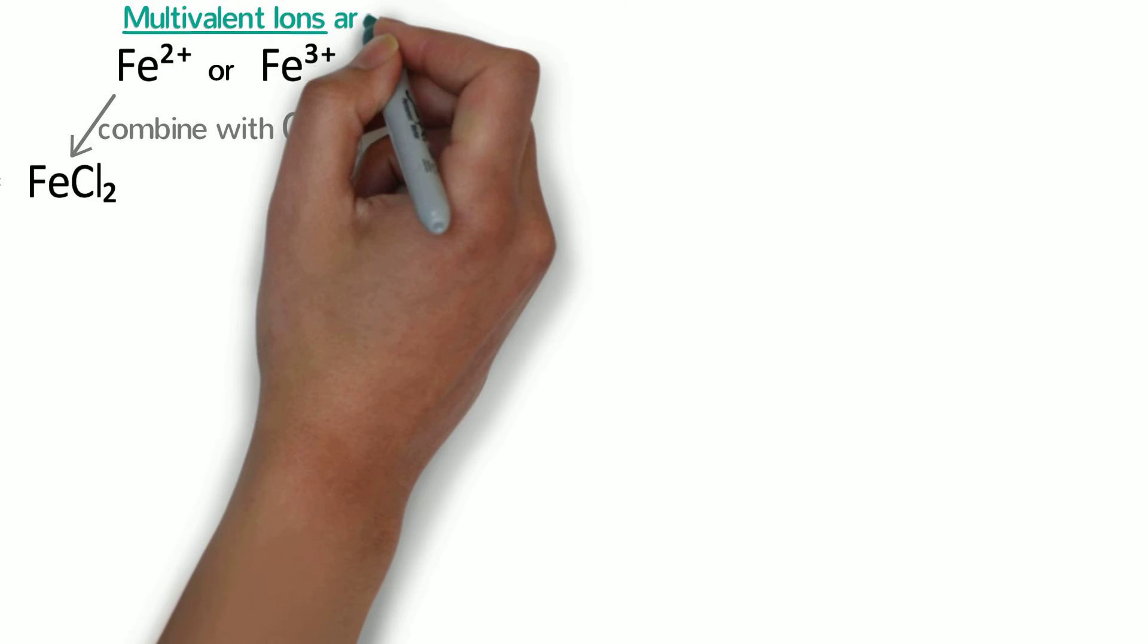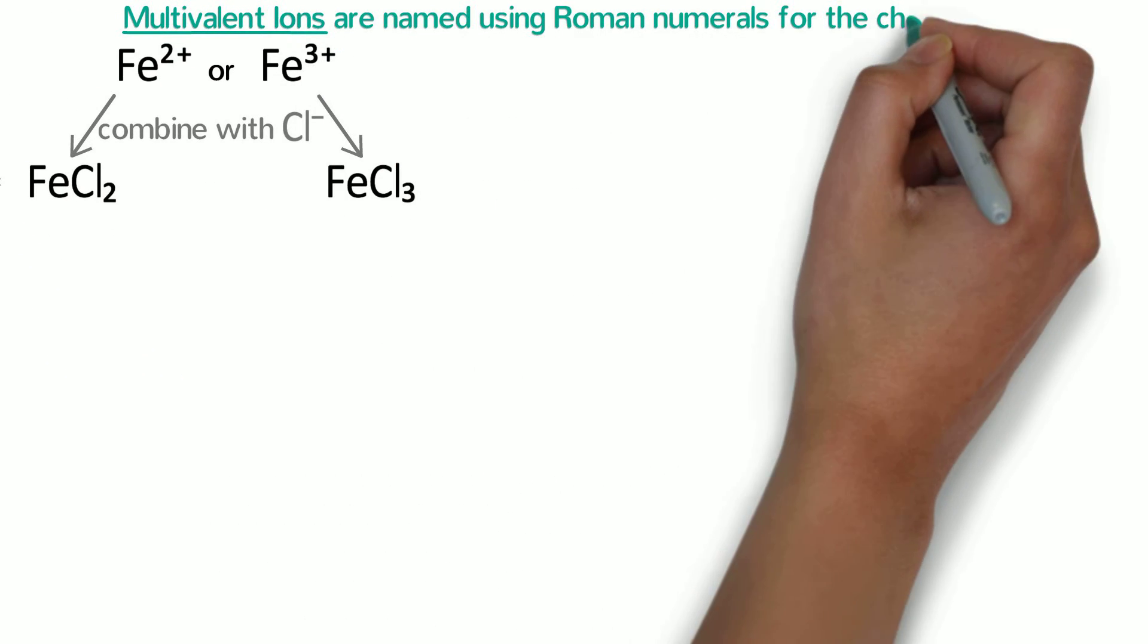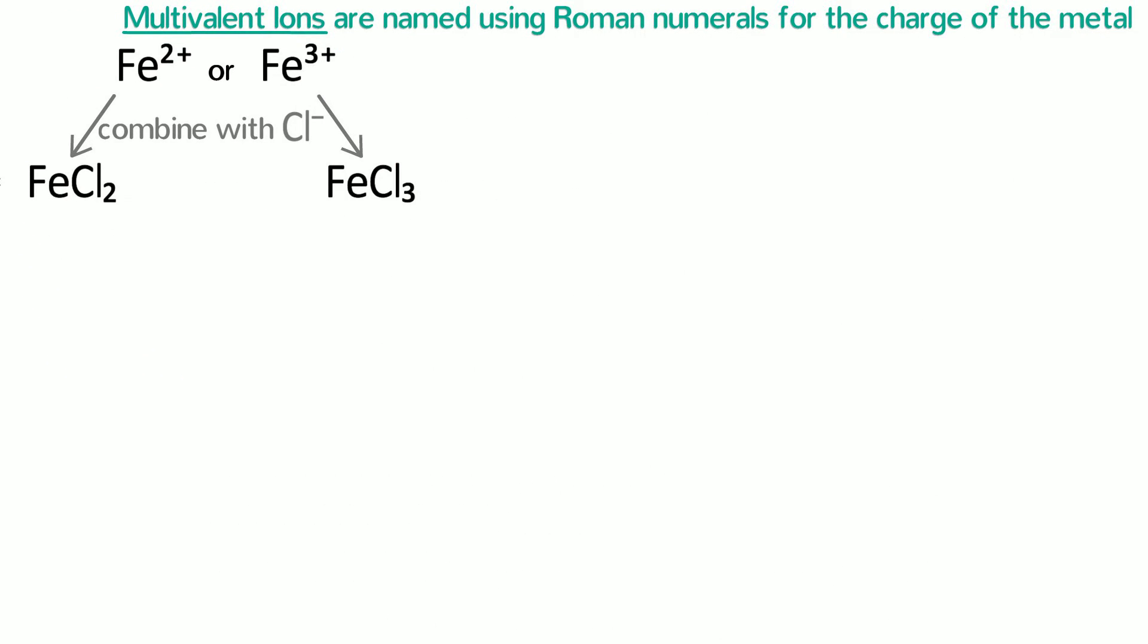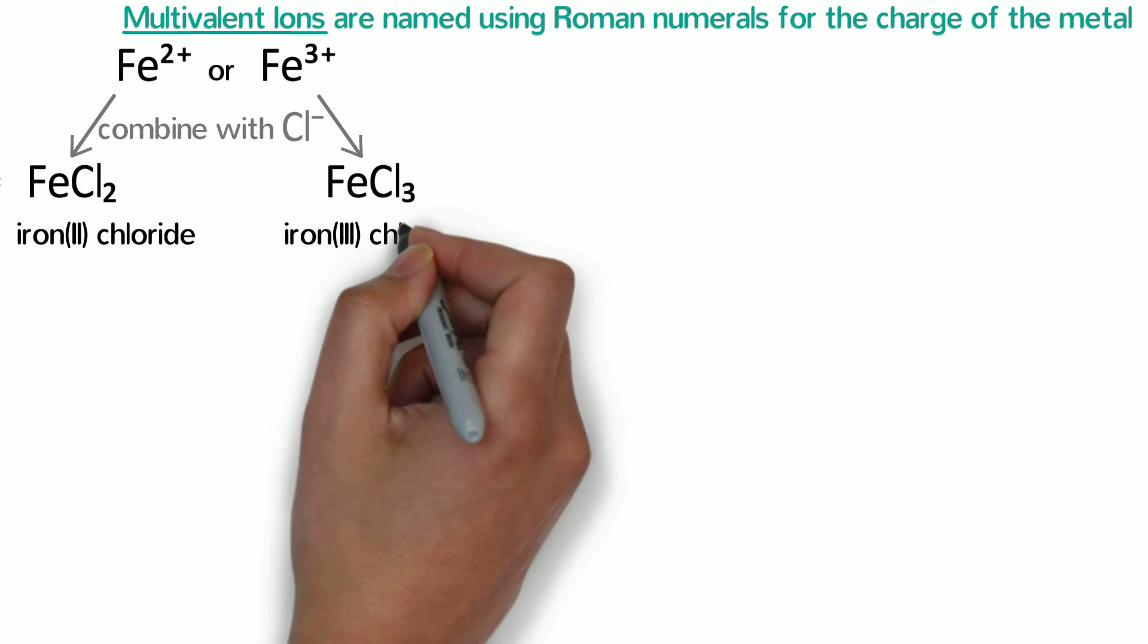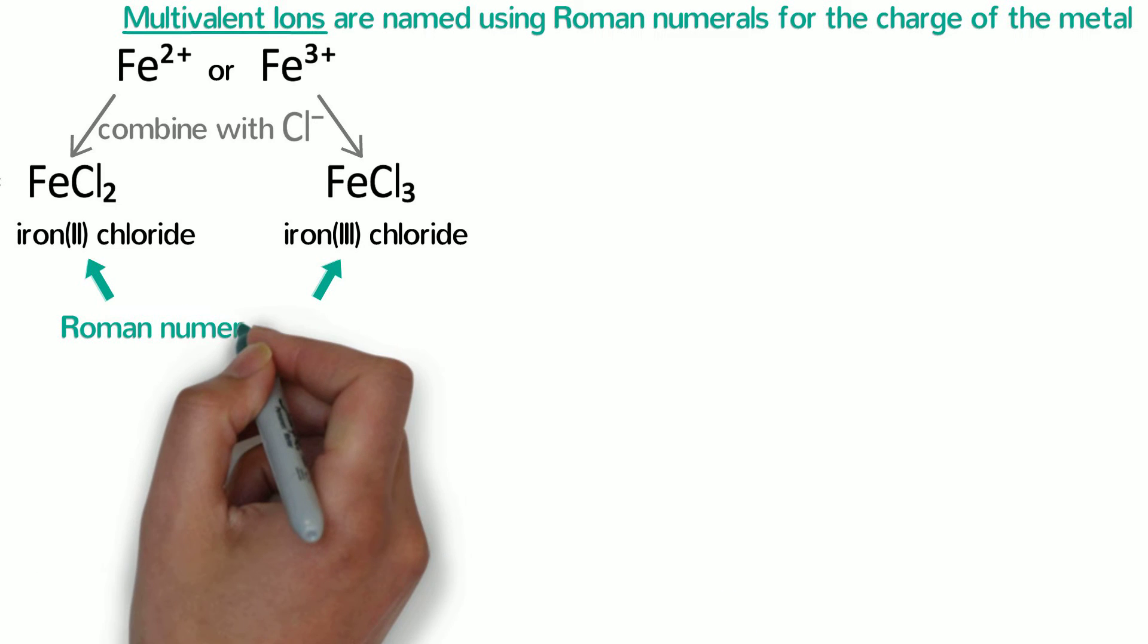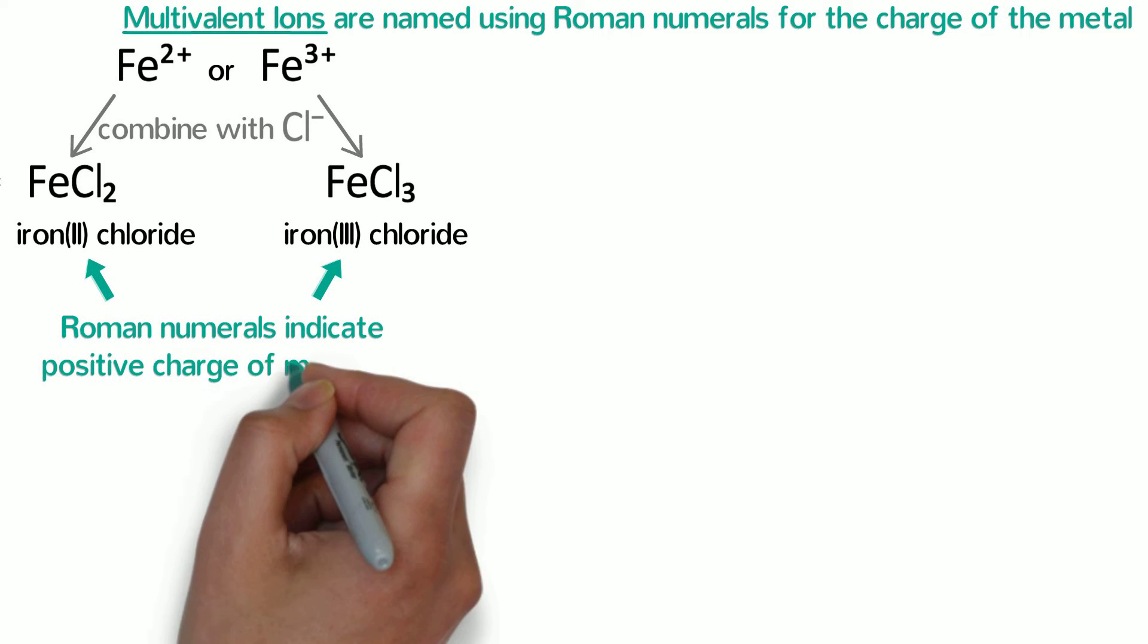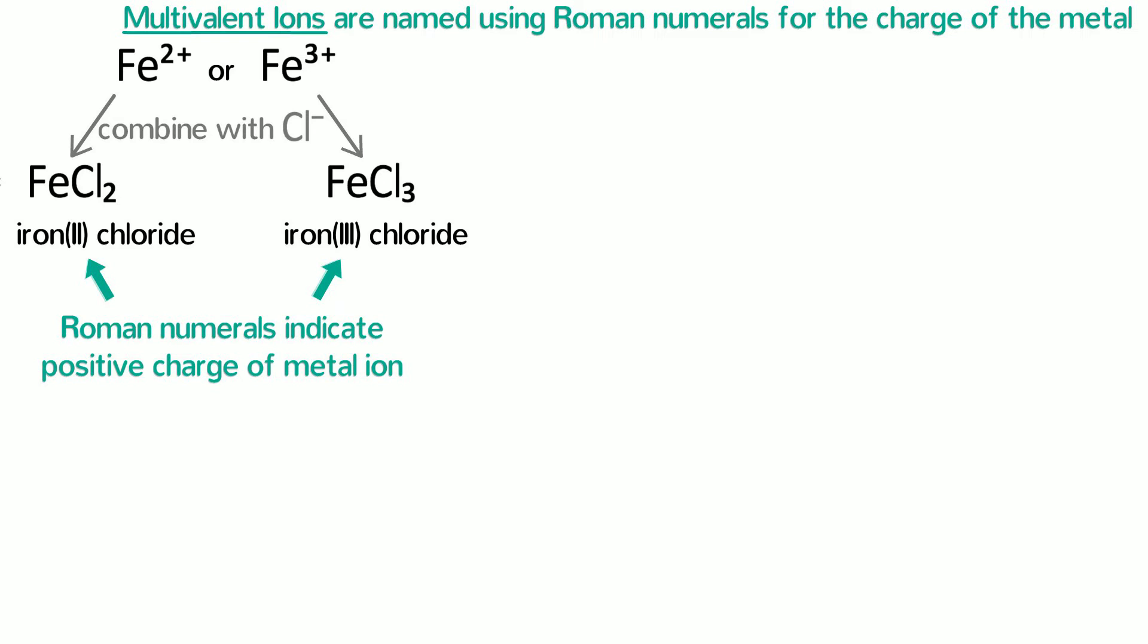Instead, multivalent ionic compounds are named using Roman numerals for the charge of the metal. So FeCl2 is called iron(II) chloride and FeCl3 is called iron(III) chloride. Remember that the Roman numerals indicate the positive charge of the metal ion, not any number in the formula. Just in case you're not familiar with Roman numerals, here's a list of the ones you need for naming chemicals.